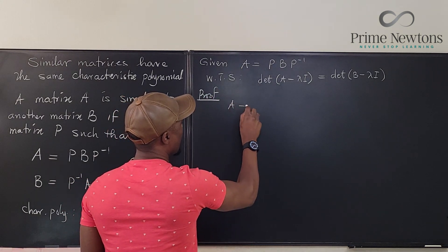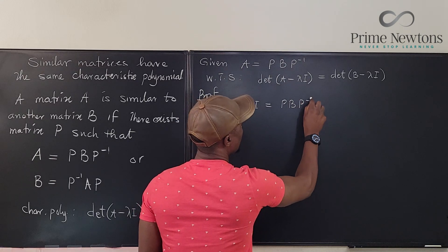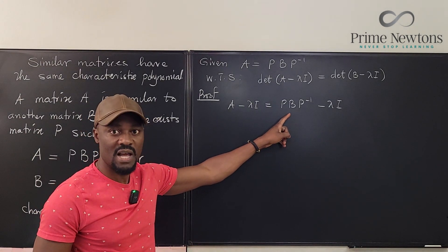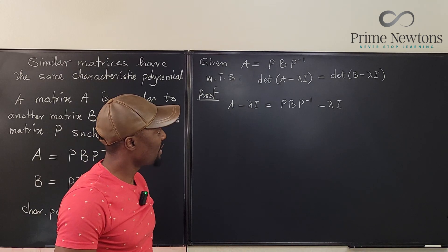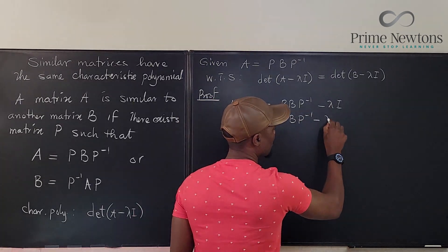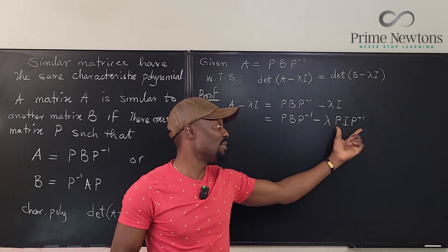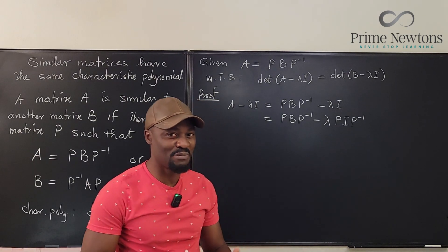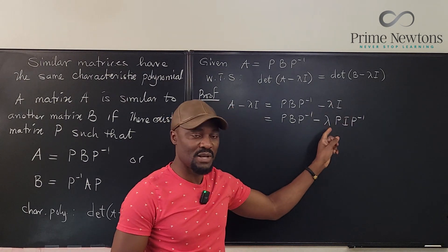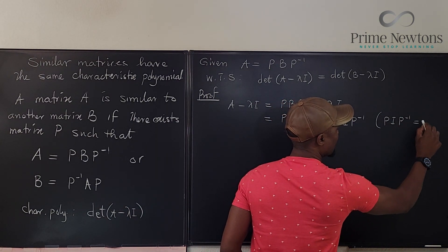We know that A minus lambda I equals PBP inverse minus lambda I. The focus is on the right-hand side. We can write this as PBP inverse minus lambda times P I P inverse, because P I P inverse equals I, so this substitution doesn't change anything.